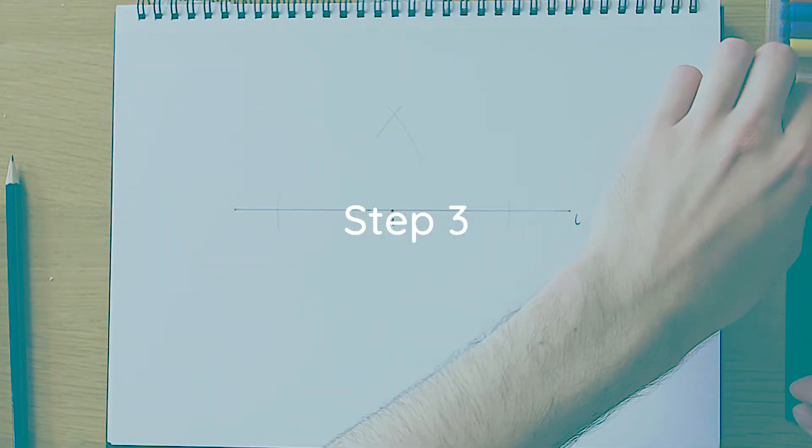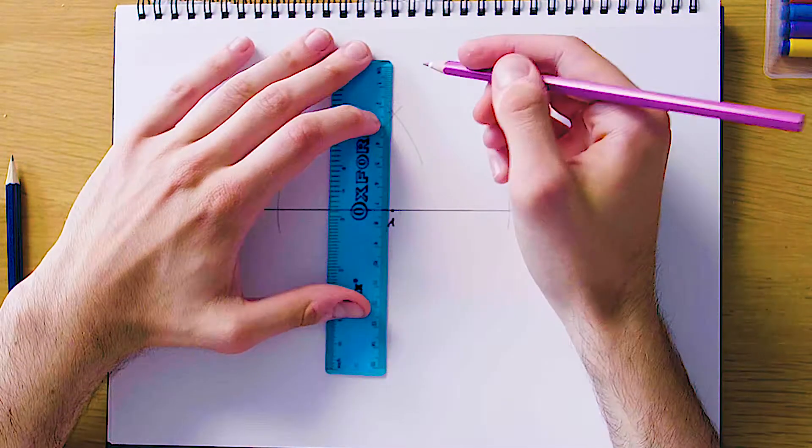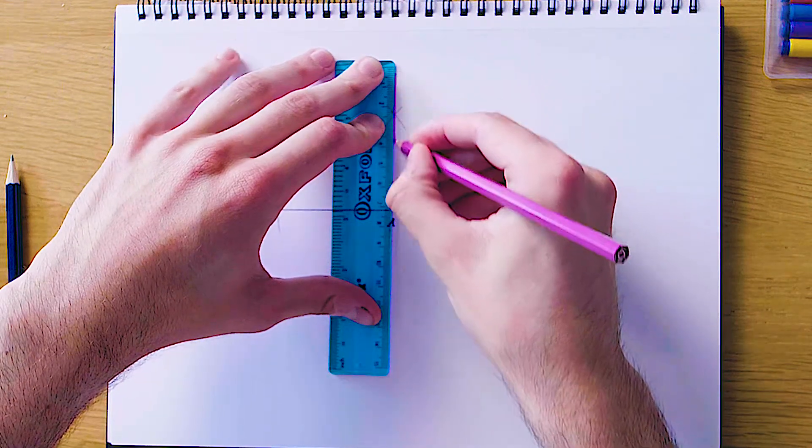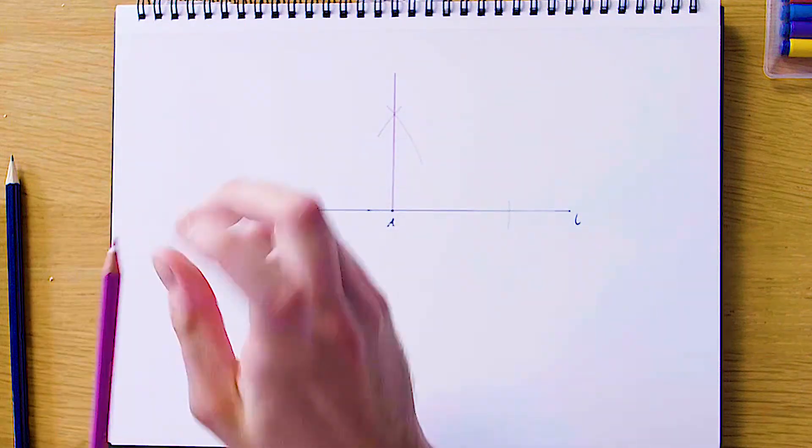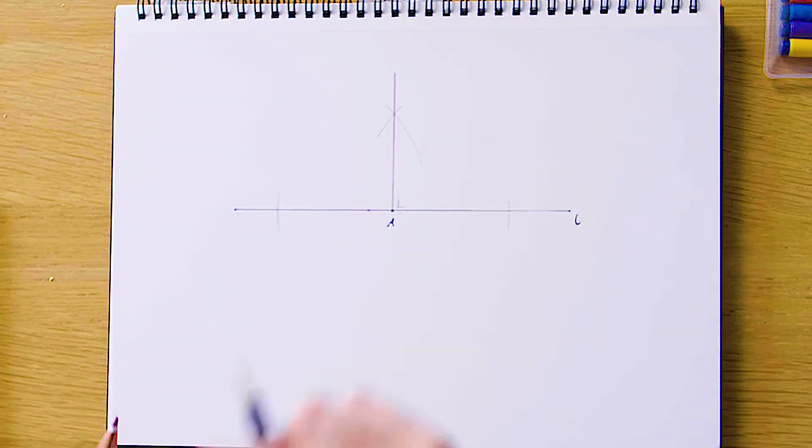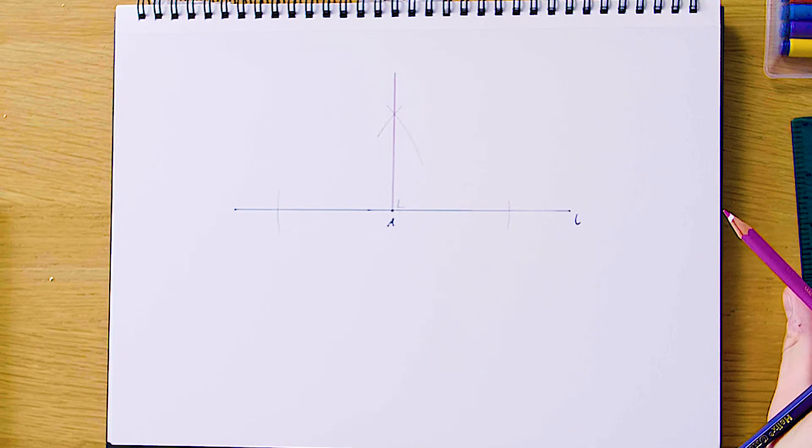The last step here is to grab your ruler and draw your perpendicular line which passes through point A and through this intersection as well. We're just going to draw it in pink, and that means that this angle in here is of course 90 degrees as it's perpendicular. That is it for this video and I'll see you next time.